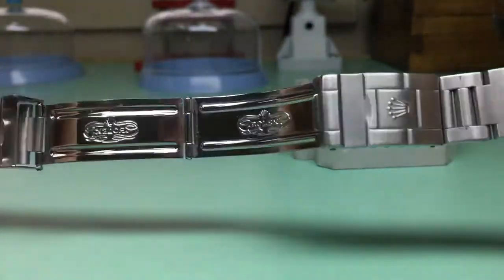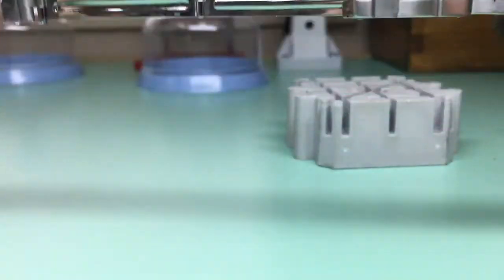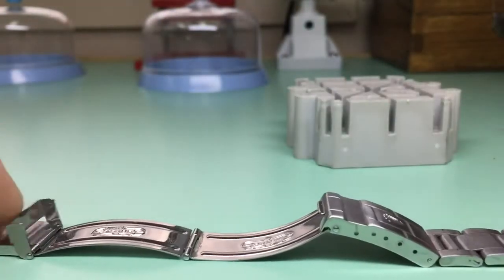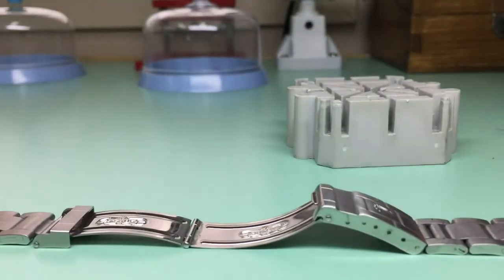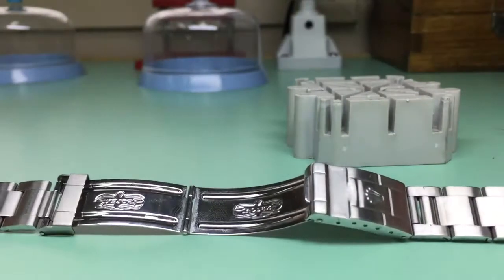We're going to use a Rolex Oyster bracelet here for our example, but this tutorial will really work for any bracelet that has screws. Before we get started, we need to go through the tools that are needed to successfully remove and then reinstall a bracelet screw.